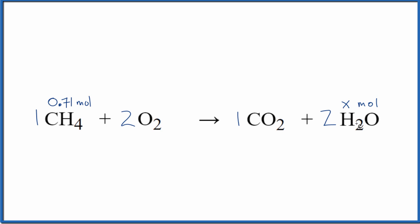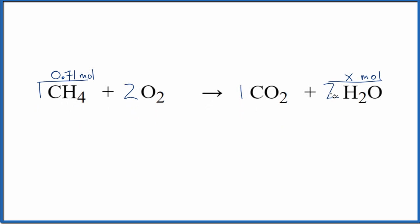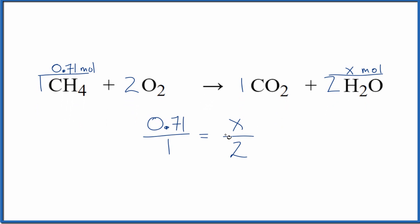You can just reason it out quite often. You could also think of it as a ratio like this: 0.71 is to 1 as X is to 2. When we solve for X by cross-multiplying, we get X equals 1.42. Same thing.